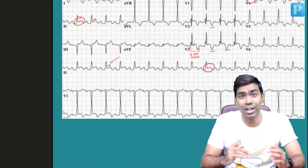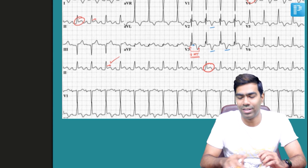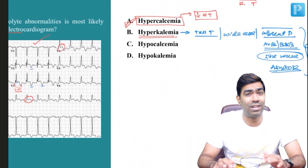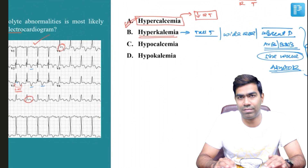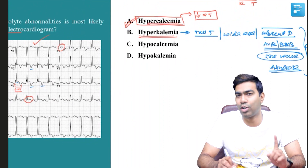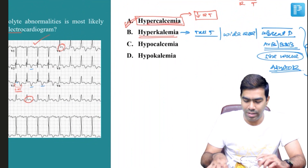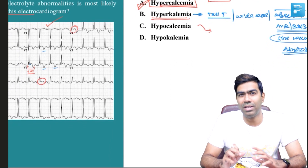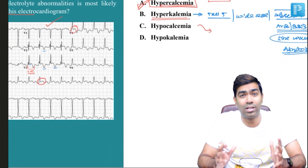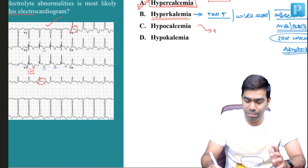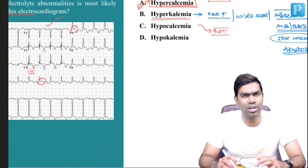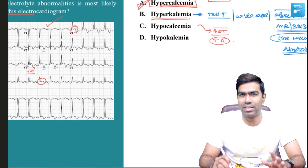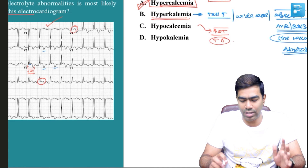Remember, in hyperkalemia you see a tall T wave, not a flat T wave. But if you see an ST segment elevation, short QT, and a flat T wave, think about hypercalcemia. In hypocalcemia, there will be a long ST segment, and because of that there will be prolongation of the QT interval. You might also see some associated T wave changes, which are not that important.